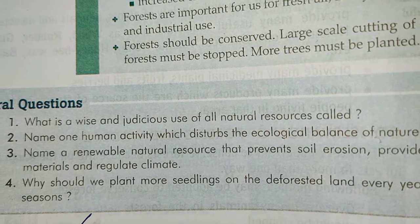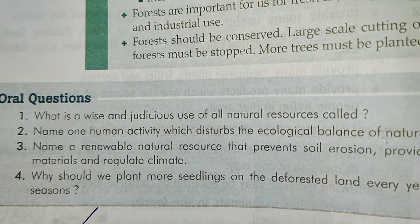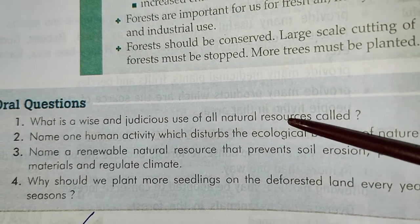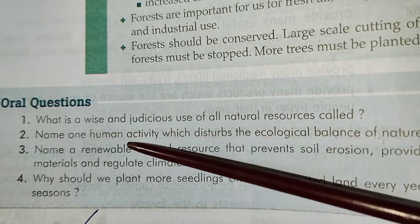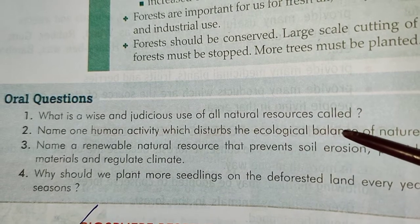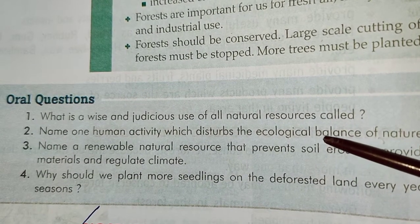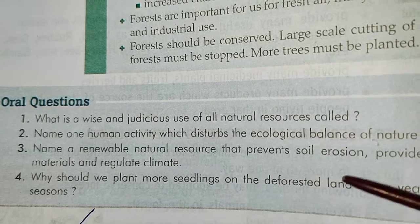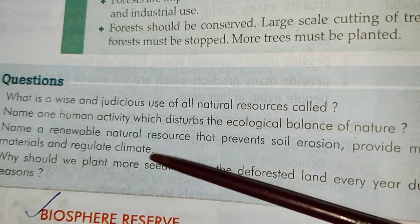We will end our class with these questions. Question number one: what is the wise and judicious use of all natural resources called? The answer is conservation. Number two: name one human activity which disturbs the ecological balance. The correct answer is deforestation. Question three: name a renewable natural resource that prevents soil erosion, provides many useful things, and regulates climate. The answer is forest.